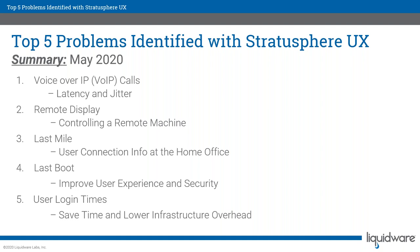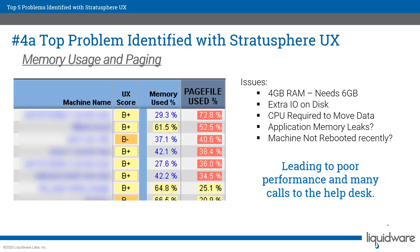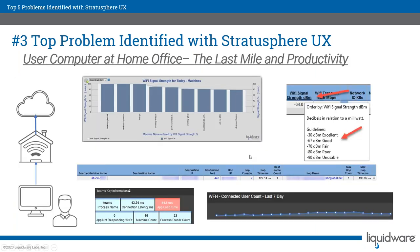Question about VoIP latency reports: it's not a built-in report per se, but you can export data from Stratosphere into Excel. There are over 300 reports in Stratosphere, and since the VoIP tracking feature is new in 6.15, I'll check with the developers whether a dedicated report is included in that release.